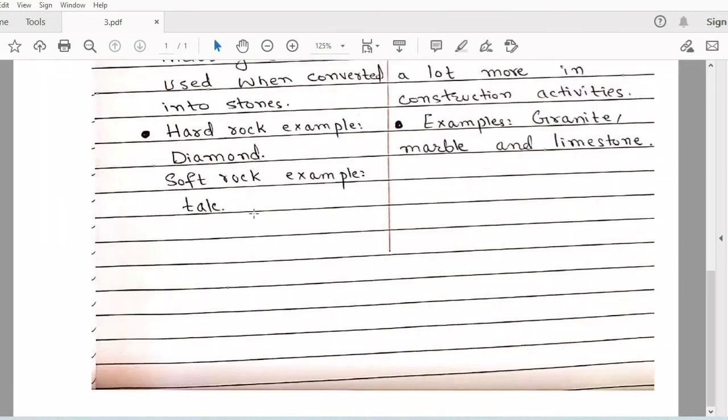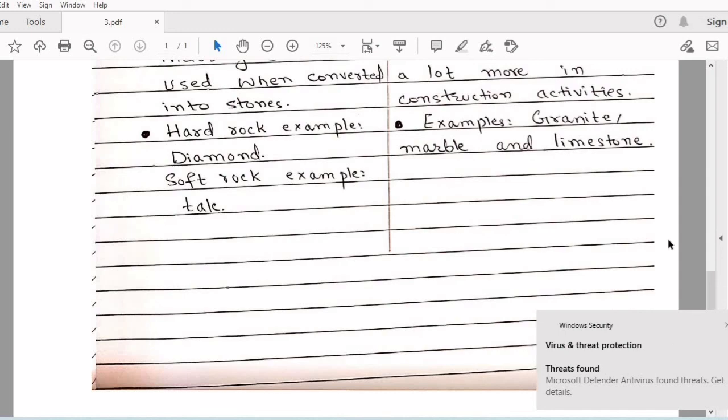Examples of rock and stone. Rock can be hard and rock can be soft, but most of the time stones are hard. An example of hard rock is diamond and soft rock is talc. Examples of stones are granite, marble and limestone.